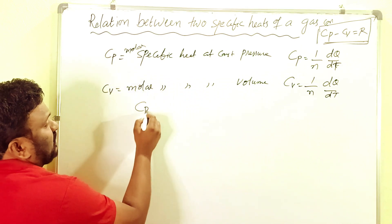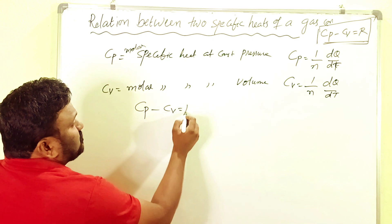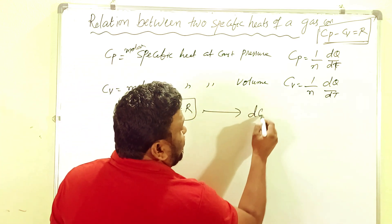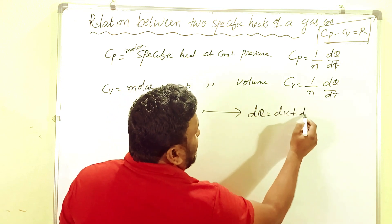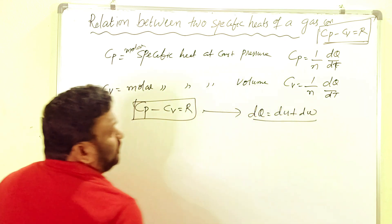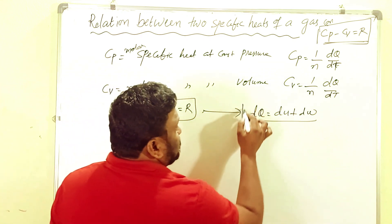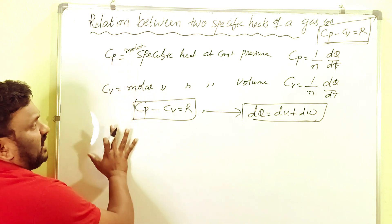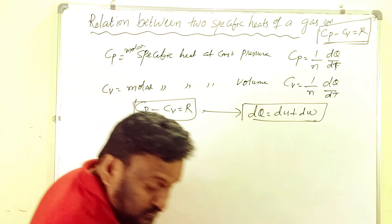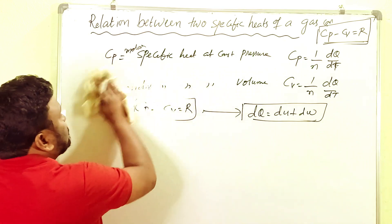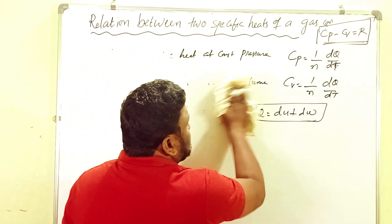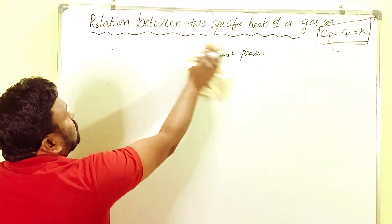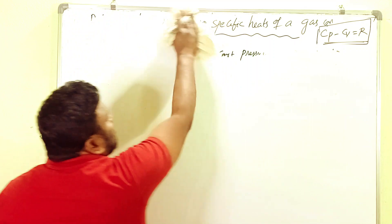Now we have the derivation: cp minus cv equals r. We will use the first law of thermodynamics, which states dq equals du plus dw. Using this equation we have to find out the relation between cp and cv. First, we need to find out how much work is done in a container when we apply some force or create some pressure.